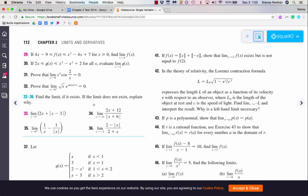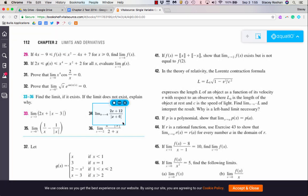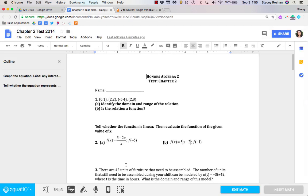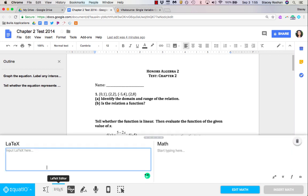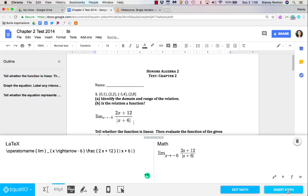What I can do is do the more options and then copy in LaTeX, and then go back over to my Google Doc and then just type in the LaTeX editor right here, paste in the equation, and then I can just insert the math and boom, it inserts it just like that.